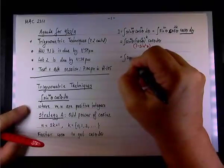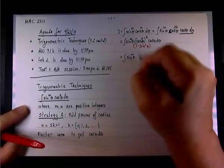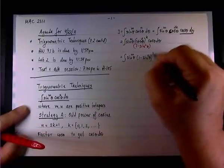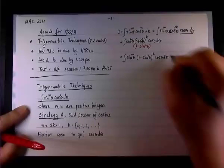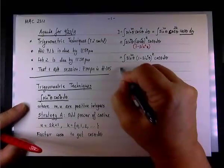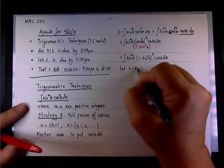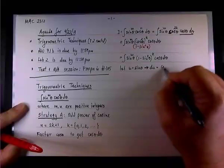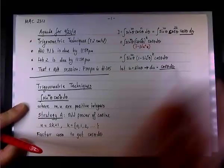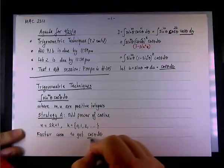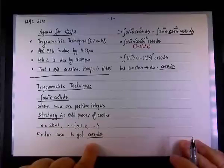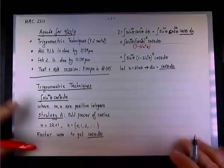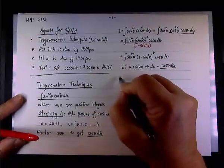So use this substitution, and we end up having the integral of sine theta to the n power, and then 1 minus sine squared, all of it raised to the kth power, and then the cosine theta d theta, and I'm ready to do the substitution. So we're going to let u equal sine theta, and therefore du equal cosine theta d theta,